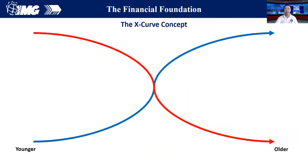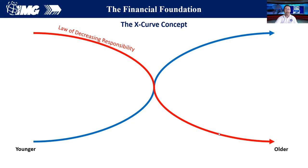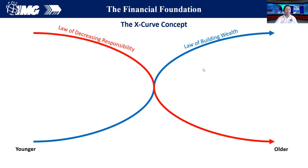I'll be talking to you about the X-curve concept. In our life, all of us started at a younger age and eventually we will end up during our older age. This red line is what we call the law of decreasing responsibility, or our financial obligations. The blue line represents our wealth, or what we call the law of building wealth. Theoretically, as we get older, we should increase our wealth and decrease our financial obligations.